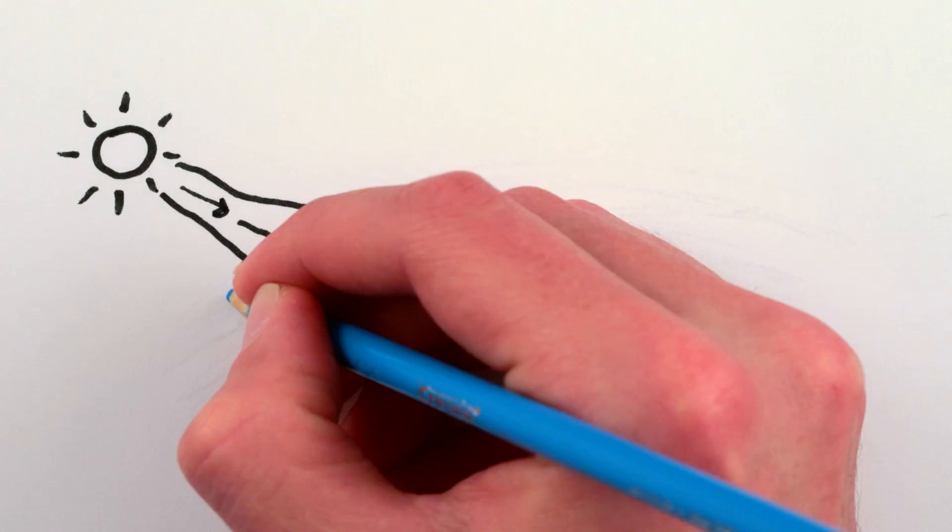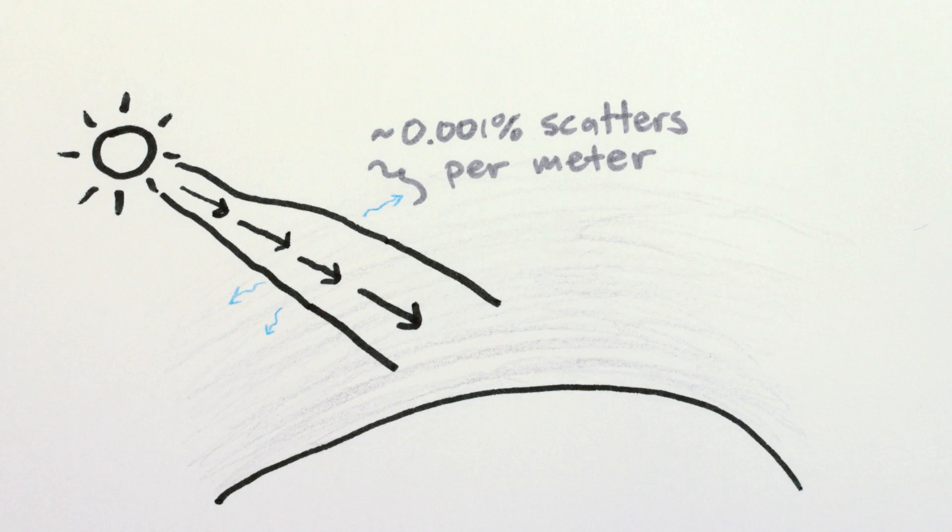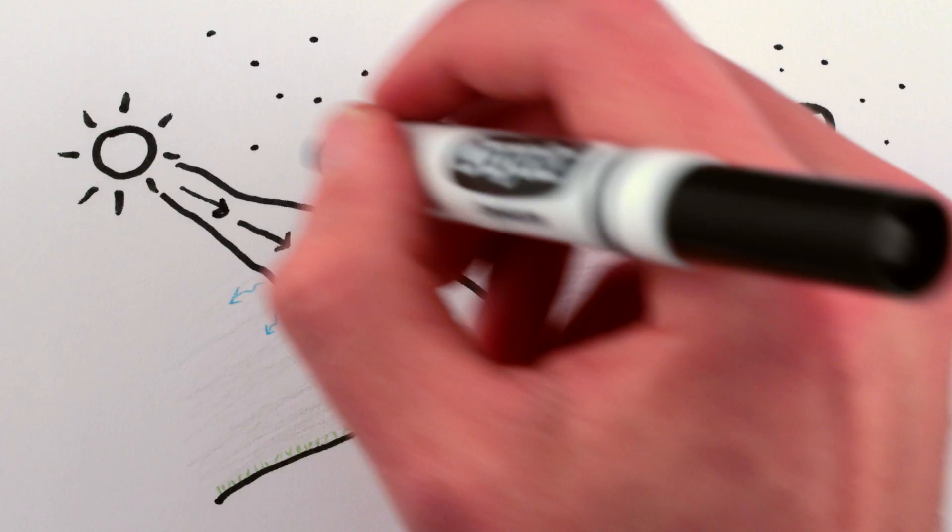But still, only a tiny bit of light scatters, while most of it goes straight through, which is how the sun can light up the ground, why we can see the moon and stars through the atmosphere.